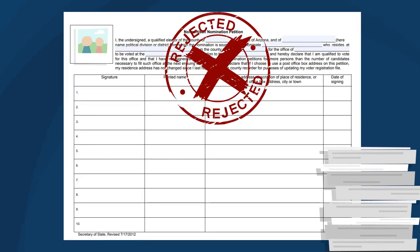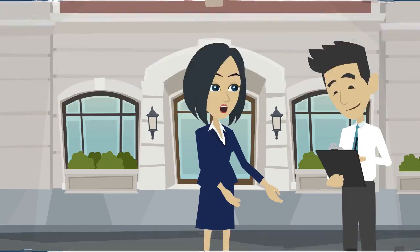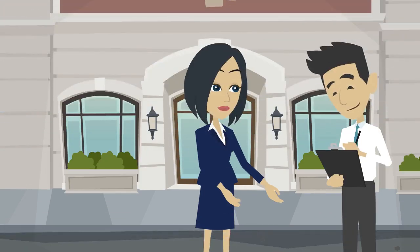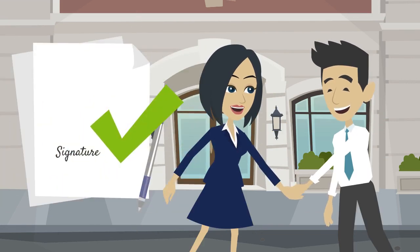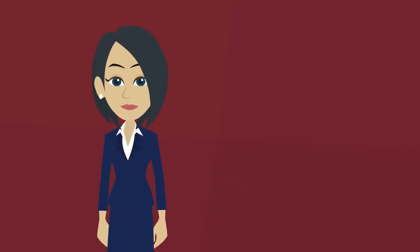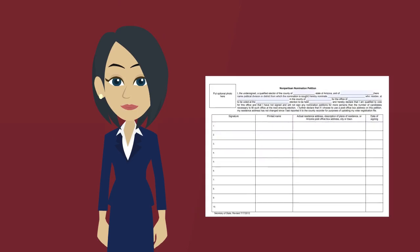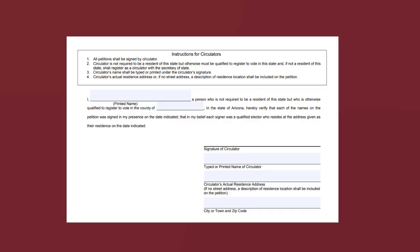No corrections to the heading can be made after the petition is circulated. While collecting signatures, the circulator of the petition must witness signatures and watch for accuracy. There can only be one circulator for each petition sheet, and the back must be completed and signed by the circulator.